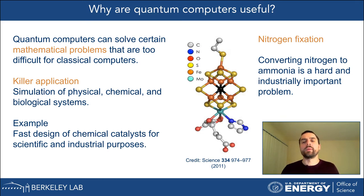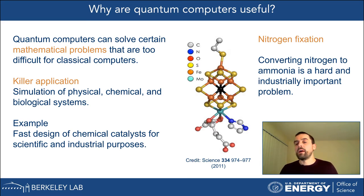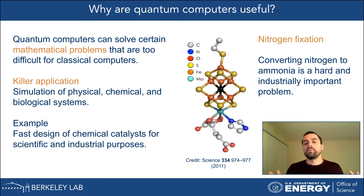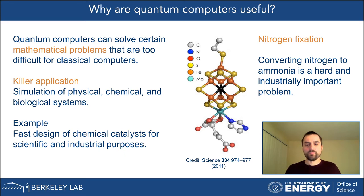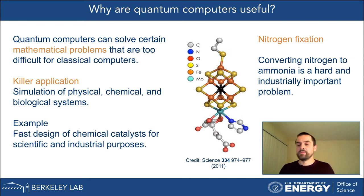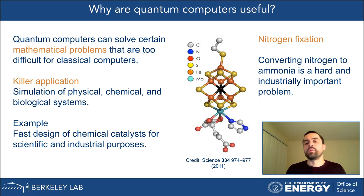One common example in this field is nitrogen fixation — the process of converting nitrogen to ammonia, which is used in fertilizers. It is interesting that about 2% of total world energy production today is used for this chemical process, just to convert nitrogen molecules from the air into ammonia. So if there were a better way to do this, it would have huge consequences for industry and economy.